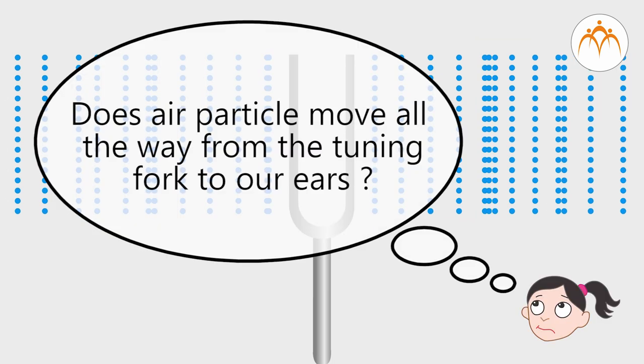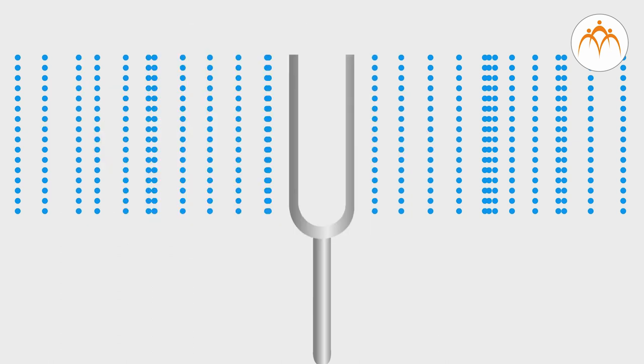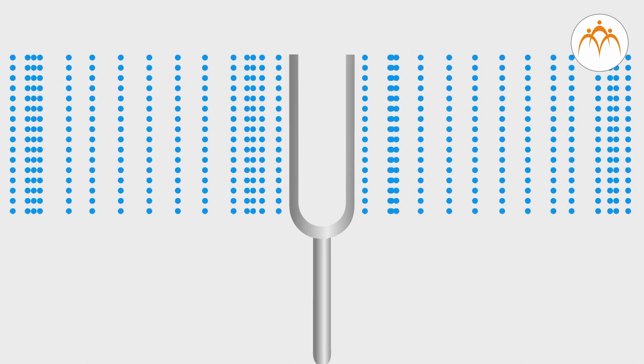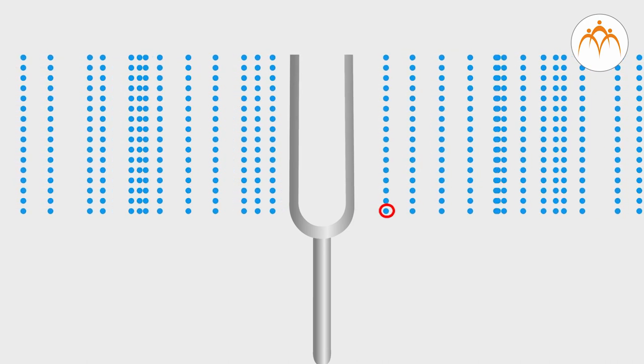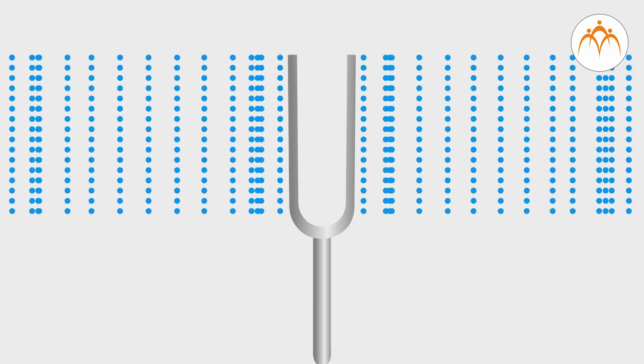Does air particle move all the way from the tuning fork to our ears? No, it is the energy that is transmitted. Air particle moves right and left just like the prongs of the fork.